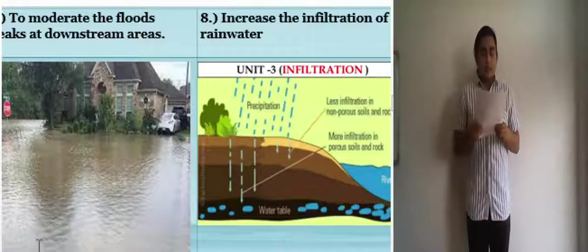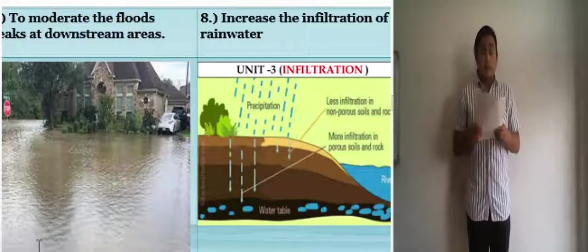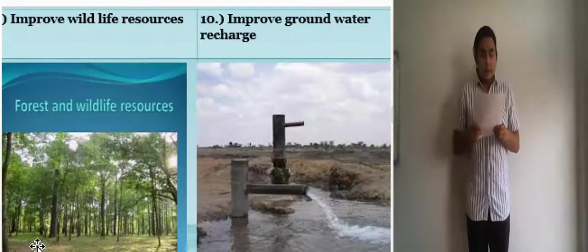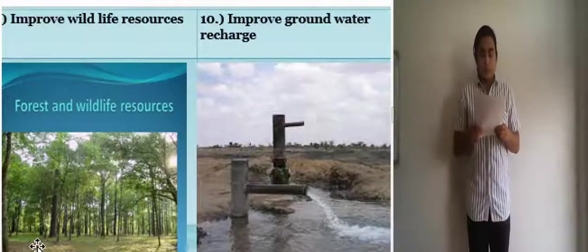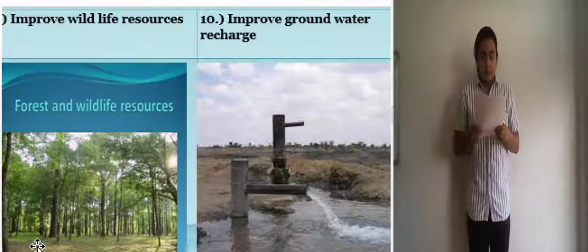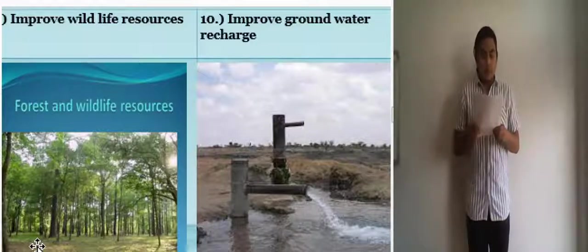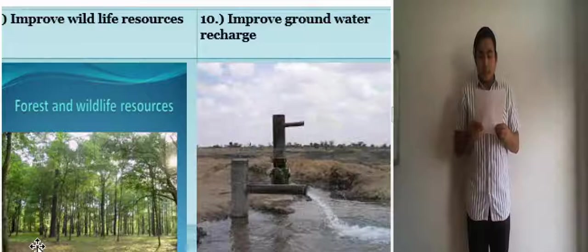The seventh is to moderate the floods, peaks and downstream areas. And the eighth one is to increase the infiltration of rainwater during rainfall or snowmelt. Ninth is to improve wildlife resources. To increase and improve the production of timbers, fodders and life resources, also for wildlife preservation. And the last one is to improve groundwater recharge. Recharging of groundwater to provide regular water supply for consumption and industry as well as irrigation.